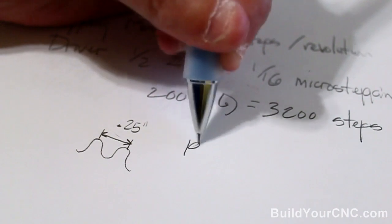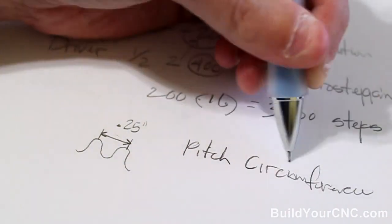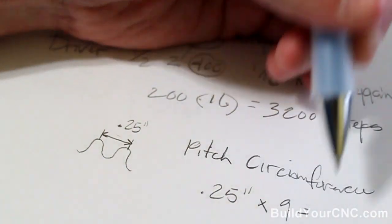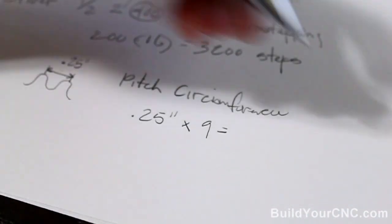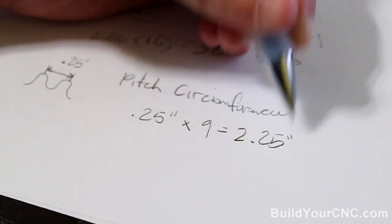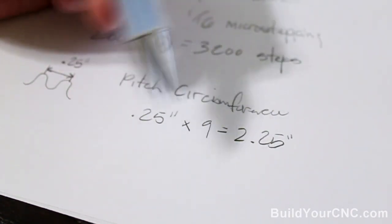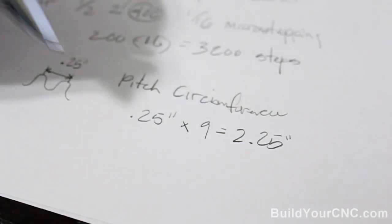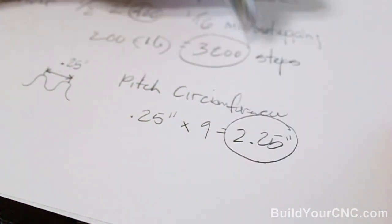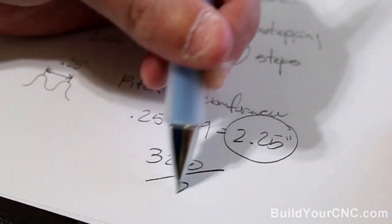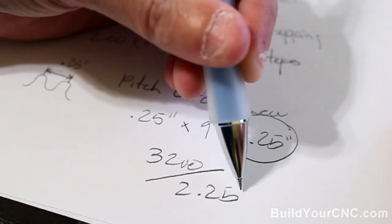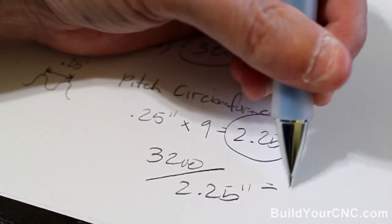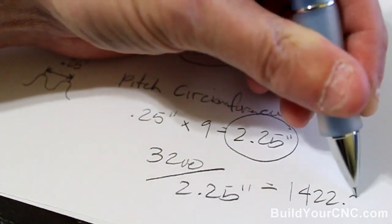So to get the pitch circumference, we'll need to take that 0.25 inches and multiply it by the number of teeth, which is nine. And with that we get 2.25 inches. So in one revolution, we're able to travel 2.25 inches. To find out how many steps it takes to go one inch, we'll take this number and this number, 3200, and we'll divide 2.25 inches to get the steps per inch. This comes out to be 1422.22.